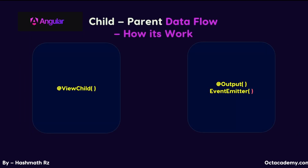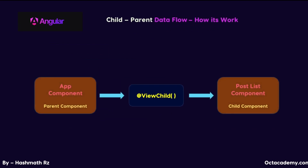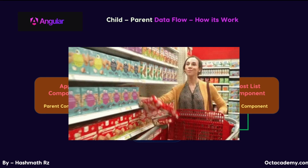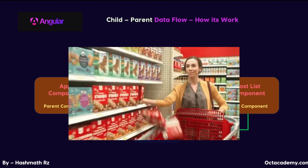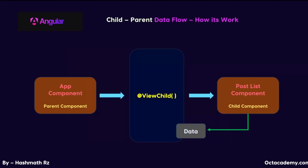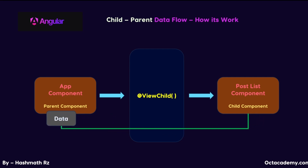In the previous lecture we learned how to deal with data flow from child to the parent component. For this we used two approaches: ViewChild and the Output Event approach. With the ViewChild decorator, we are directly looking inside the child component and accessing the data we need. Think of it like a supermarket — it lets us in with full access. So with ViewChild, we are giving the parent component full access to the child component and all the data stored inside it.